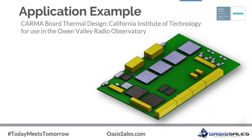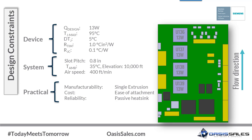The example we'll look at is the CARMA board thermal design for the Owen Valley Radio Observatory. The objective is to design a thermal solution for U136 through U139 that maintains junction temperature below 95°C, with all operating temperatures within 5°C of each other. Power dissipation is 13 W, so a high-performance TIM won't be required — we'll assume 1°C·in²/W. The IC package is a flip-chip BGA with a junction-to-case thermal resistance of 0.1°C/W. This information will be included directly in the Flotherm analysis.